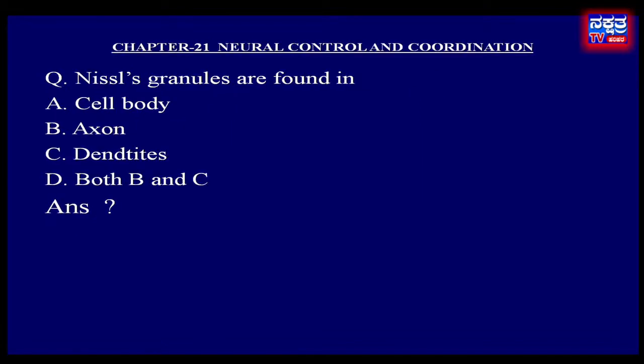Nissl's granules are found in: A. Cell body, B. Axon, C. Dendrites, D. Both B and C. This is the structure of a neuron.